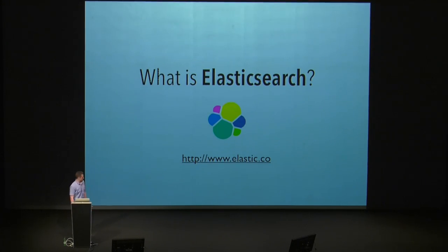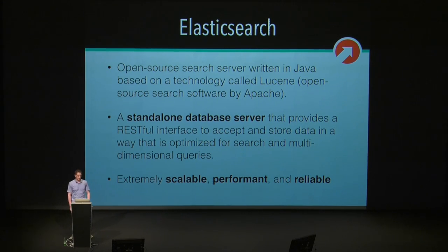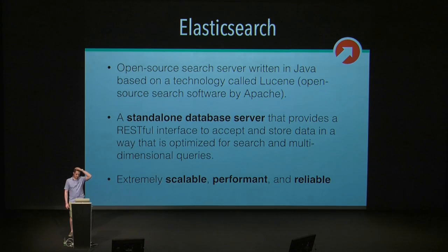So, what is Elasticsearch? Elasticsearch is open source software written in Java. It is based on a technology called Lucene, which is put out by the Apache Foundation. It is a standalone database server with a RESTful interface. It can accept and store data just like any other storage mechanism. The key takeaway is it's a standalone database server separate from MySQL. It's extremely scalable, performant, and reliable, and it makes doing complex queries and search things much easier.